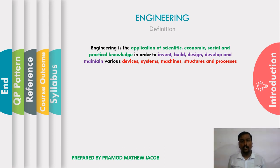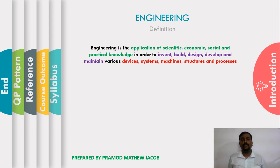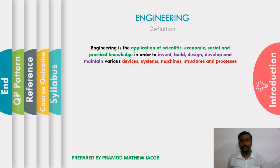The third part of the definition deals with what we are building: various devices, systems, machines, structures, and processes. A device is a component that performs limited functionalities — say two to three functions. A system is a collection of devices that can do multiple functionalities. A machine differs from a system in that it must have a movable part.